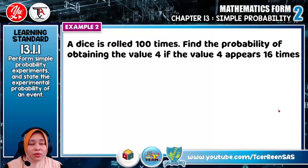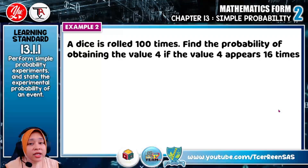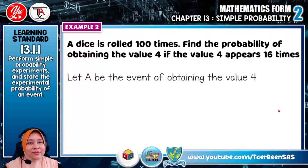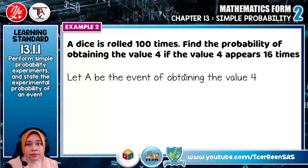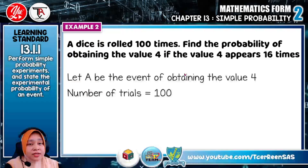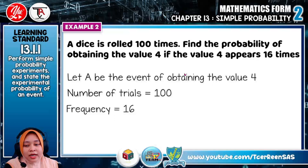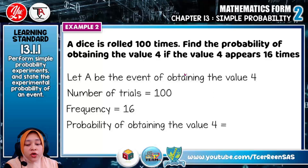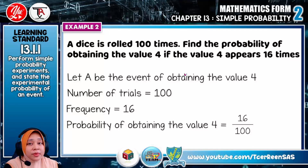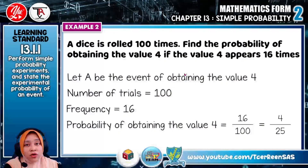Example 2: a dice is rolled 100 times. Find the probability of obtaining the value 4 if the value 4 appears 16 times. Let A be the event of obtaining the value 4. Number of trials is 100 and frequency is 16. So the probability of obtaining the value 4 is 16 divided by 100. The final answer is 4 over 25.